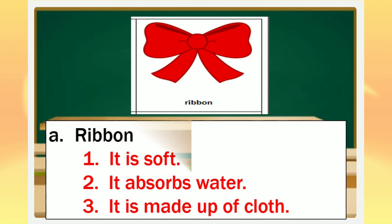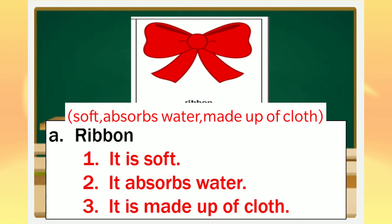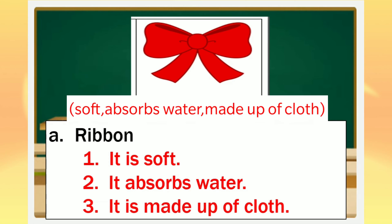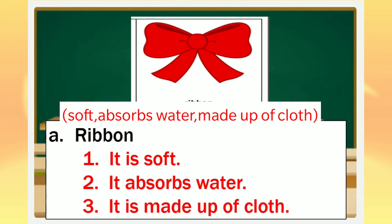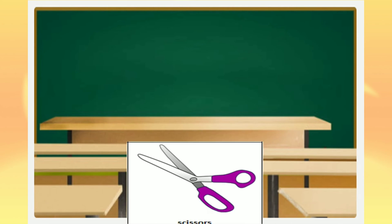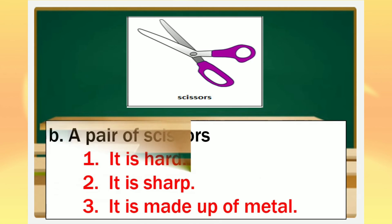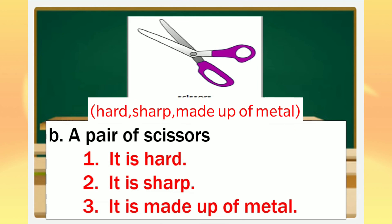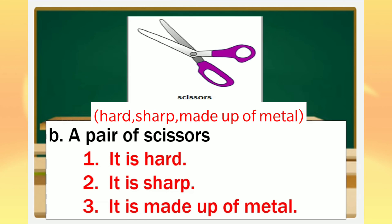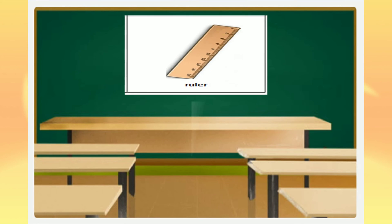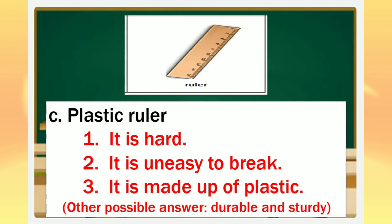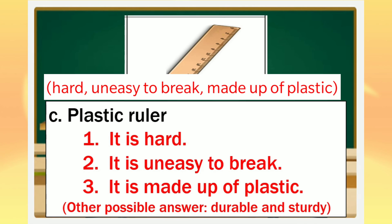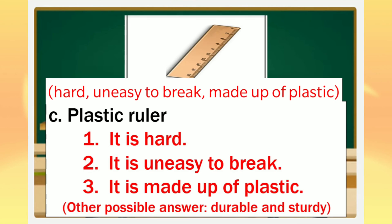Now let us check our answers. For letter A, ribbon: it is soft, it absorbs water, it is made up of cloth. Do we have the same answers? Next is a pair of scissors: it is hard, it is sharp, it is made up of metal. And for the third object, a plastic ruler: it is hard, it is not easy to break, it is made up of plastic.